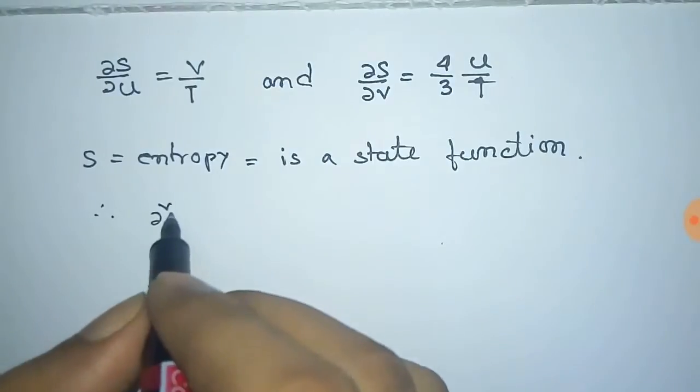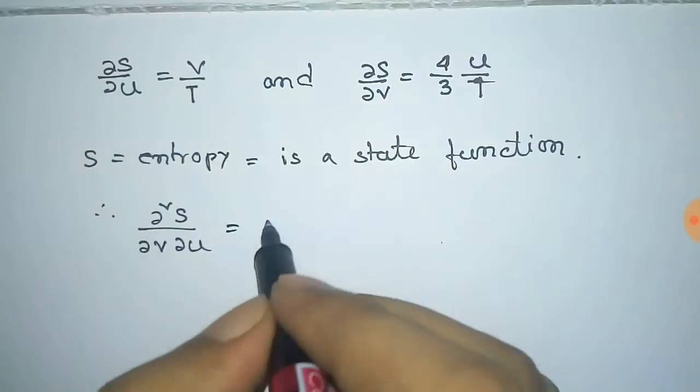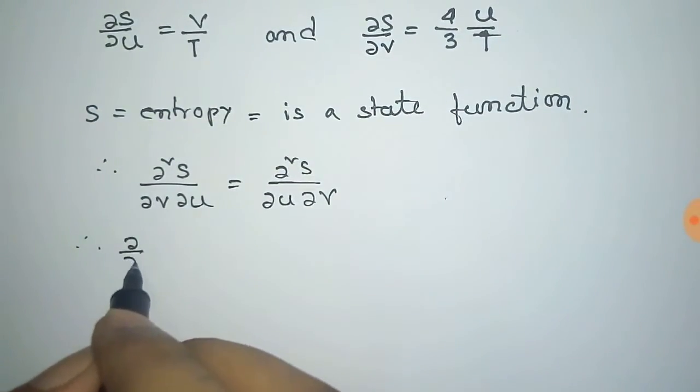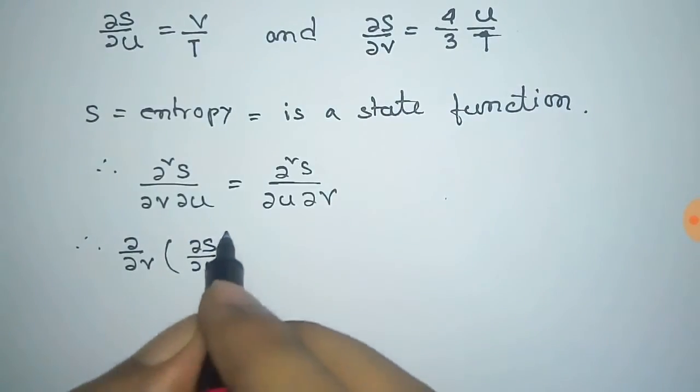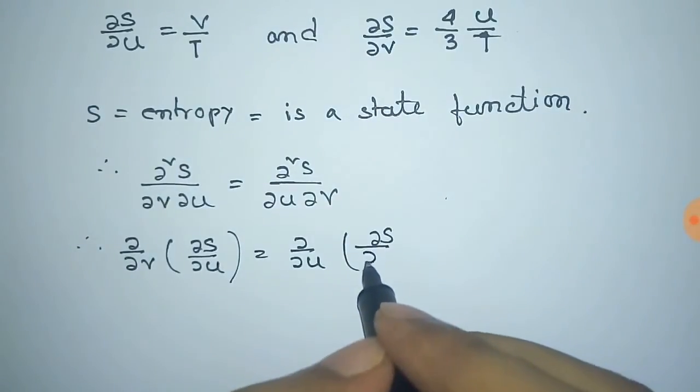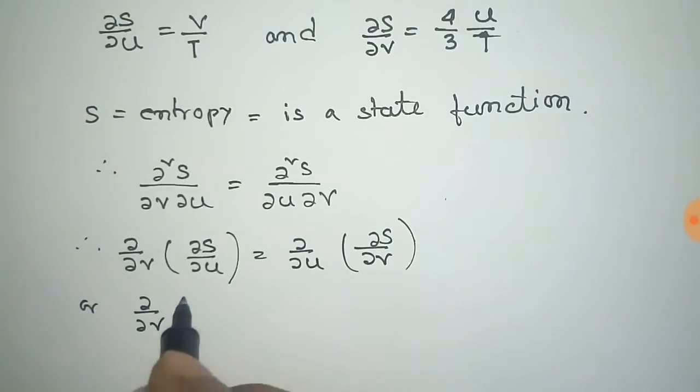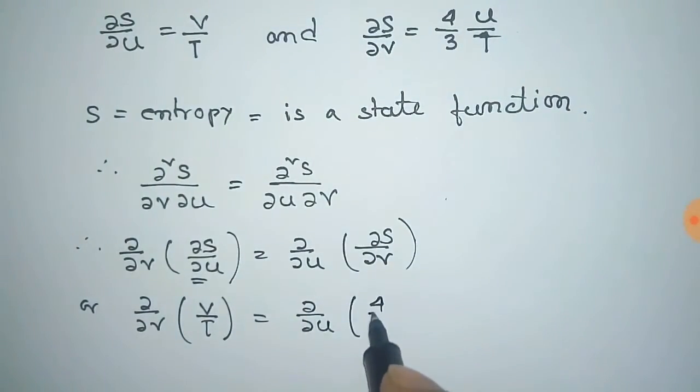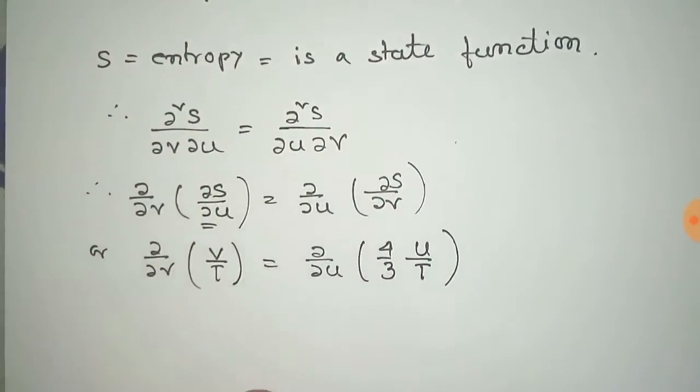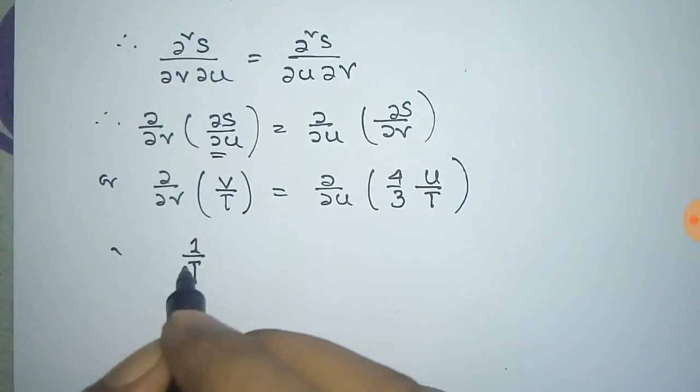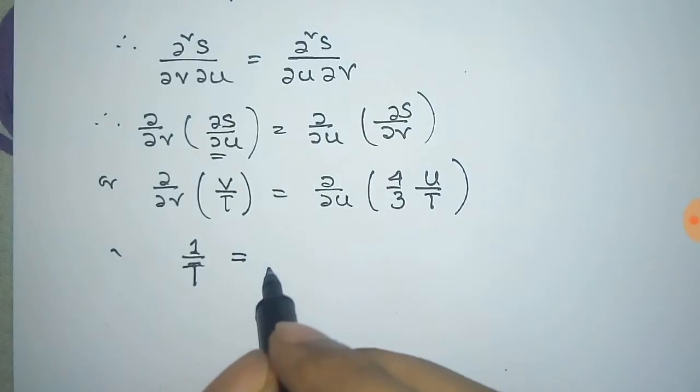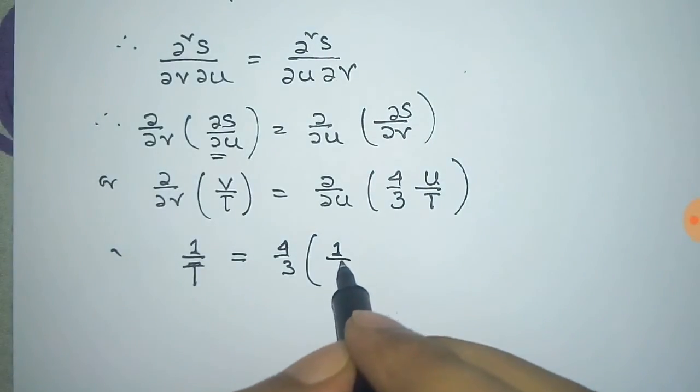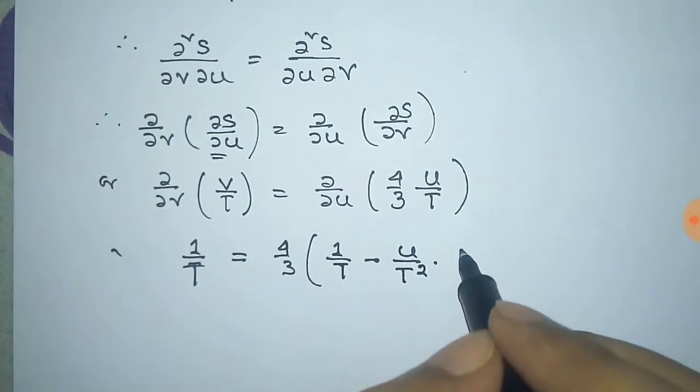We can write ∂²S/∂V∂u = ∂²S/∂u∂V, or ∂/∂V(∂S/∂u) = ∂/∂u(∂S/∂V). The value of ∂S/∂u is V/T, and the value of ∂S/∂V is 4/3 u/T. Taking derivatives, we get 1/T = 4/3 (1/T - u/T² dT/du) because T is a function of u.